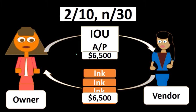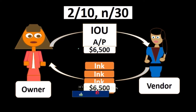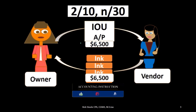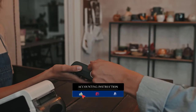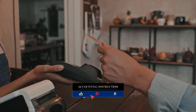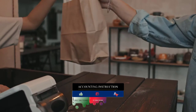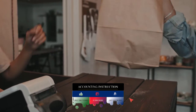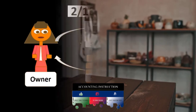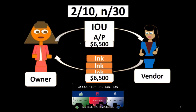If we pay after the 10 days but before the 30 days, the second transaction is straightforward — we simply pay the cash out and reduce the payable for that $6,500.